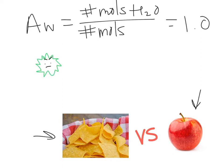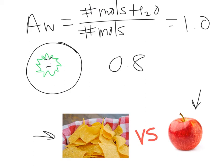A higher water activity level supports the growth of bacteria and other microorganisms within the food. At a level of 0.85 or higher, bacteria are able to grow and thrive, and that's the reason why your food either gets stale or moldy and becomes inedible after a certain period of time.